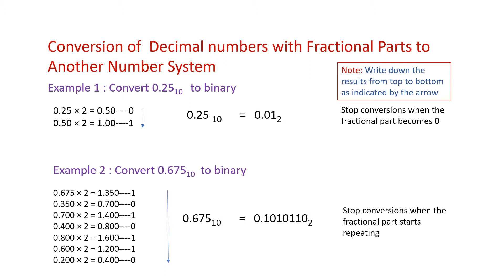Let us look at the conversion of decimal numbers with fractional parts to another number system. I saw a few problems in the NCRT book, so I thought I will share them with you. Let us take the first example: convert 0.25 decimal to binary. We multiply 0.25 by 2 and get 0.5; the integer part is 0. We take the fractional part 0.5, multiply by 2 again, and get 1.00. We stop because the fractional part became 0. So, 0.25 decimal is equal to 0.01 in binary.